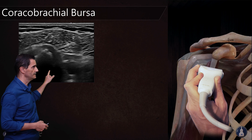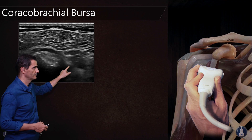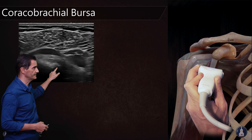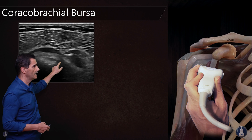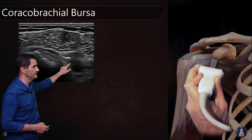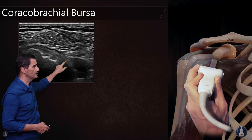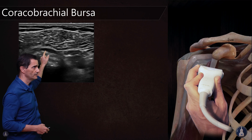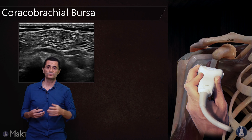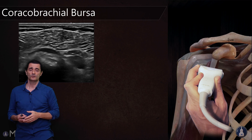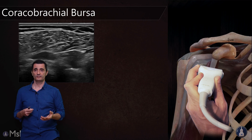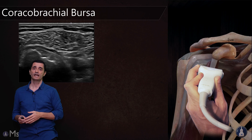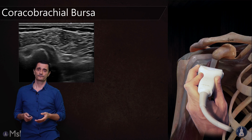You can see the bursa here. The subscapularis is this tendon. In this case, this bursa communicates with the subacromial-subdeltoid bursa, which is also pathologic. So it's not rare to see this communication between the subacromial-subdeltoid bursa and the coracobrachial bursa.